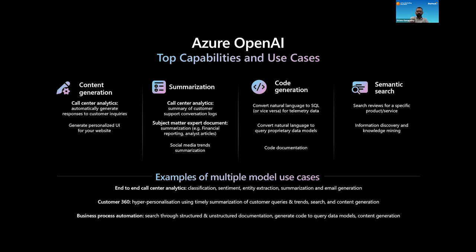The third one is very interesting: code generation. Being able to generate SQL code, programming language code, et cetera. Dan mentioned the Excel example where you can create pivot tables — but what's really happening behind the scenes is the model is generating code.